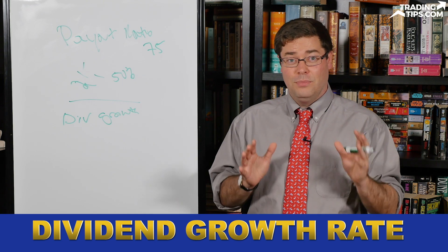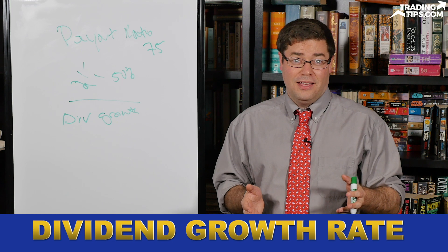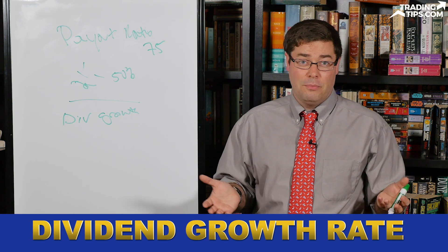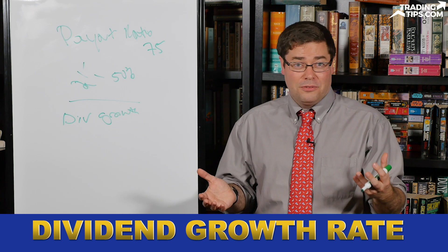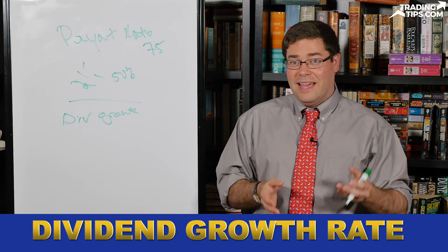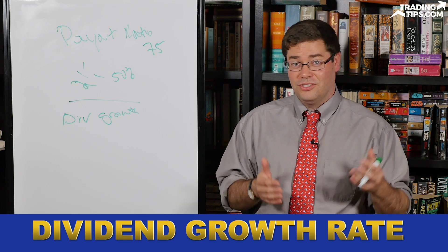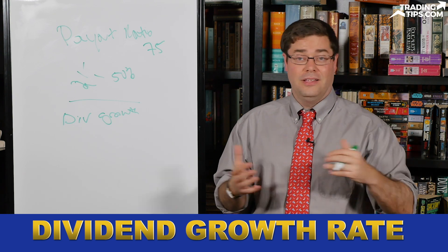And this is where dividend stocks beat the pants off of bonds over the long term. When most investors think of a non-risk investment, they might think of a bond. But if you buy a government bond right now and it yields 3%, that payment is fixed. You're going to be getting that same dollar amount and that same 3% on your cost just year after year after year until the bond matures.